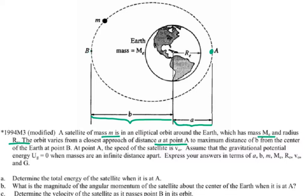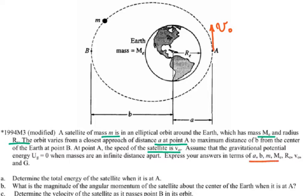The satellite is moving in a chosen direction, and at point A the speed of the satellite is V-sub-zero. Assume that the gravitational potential energy equals zero when the masses are an infinite distance apart. Express your answers in terms of a, b, M (mass of Earth), radius of Earth, V-sub-zero, and the gravitational constant G.